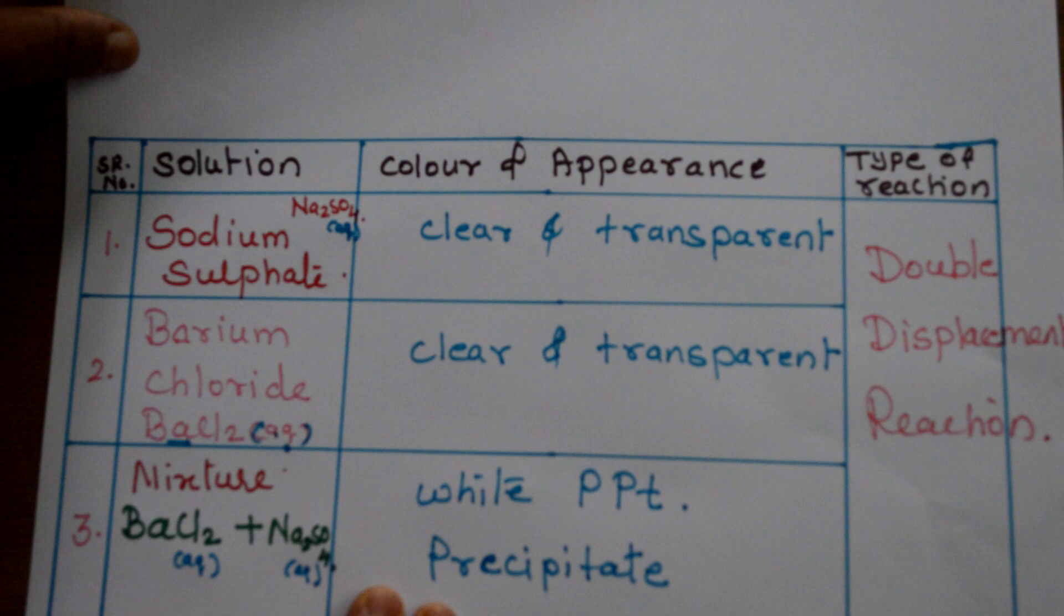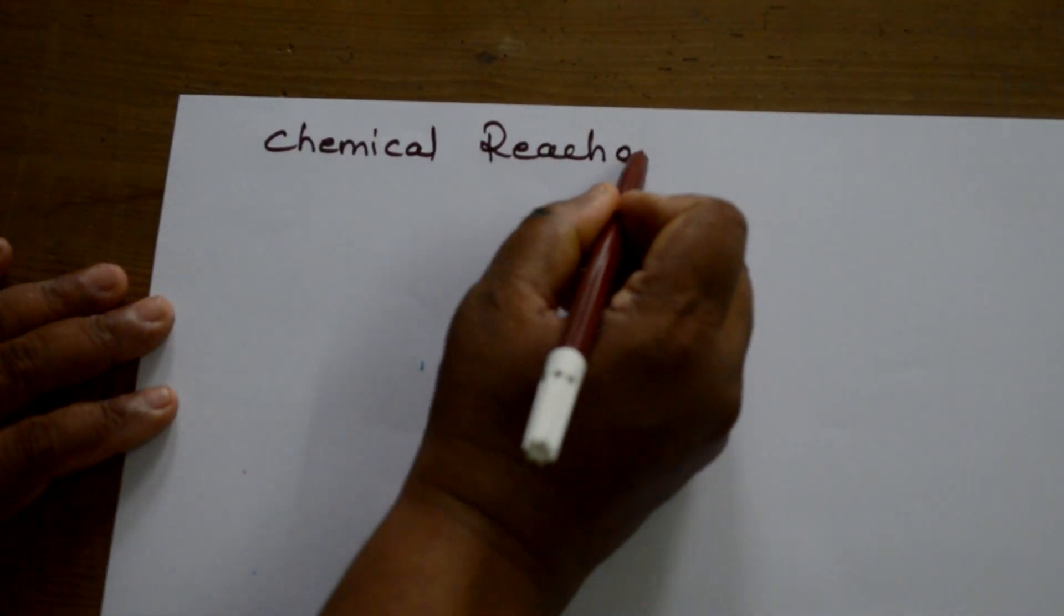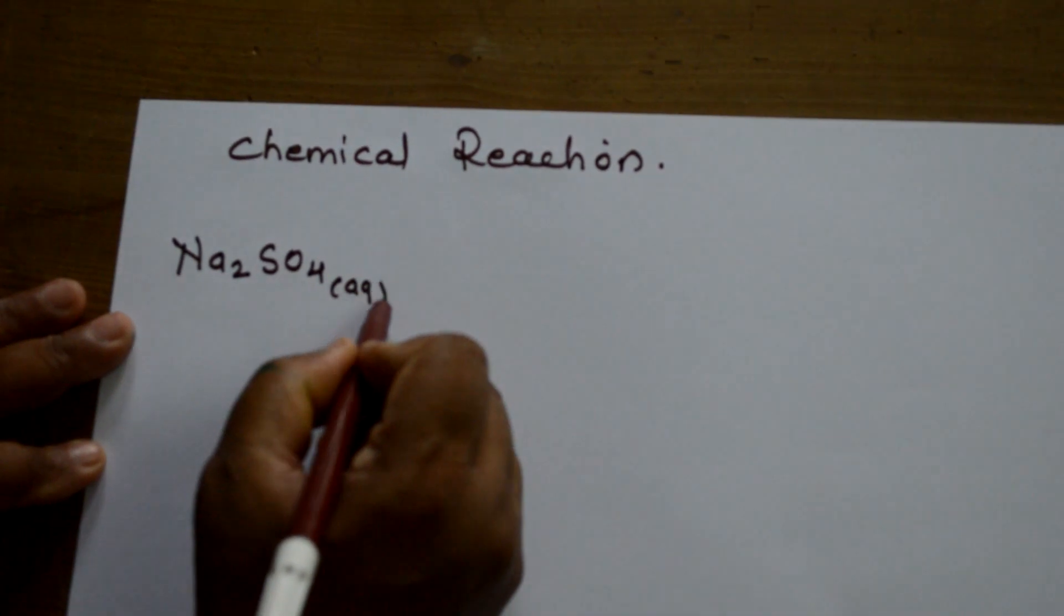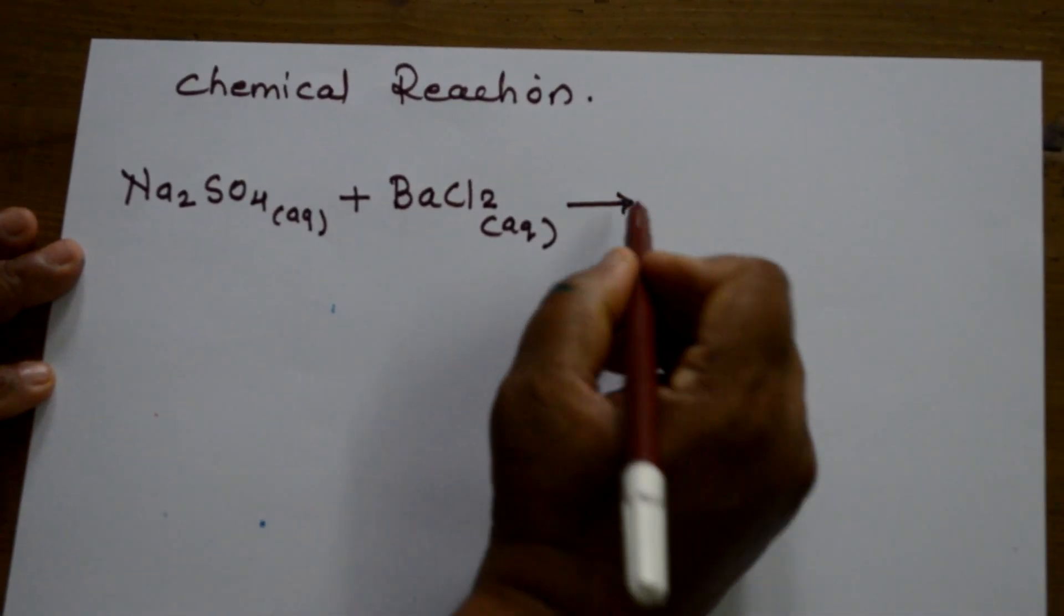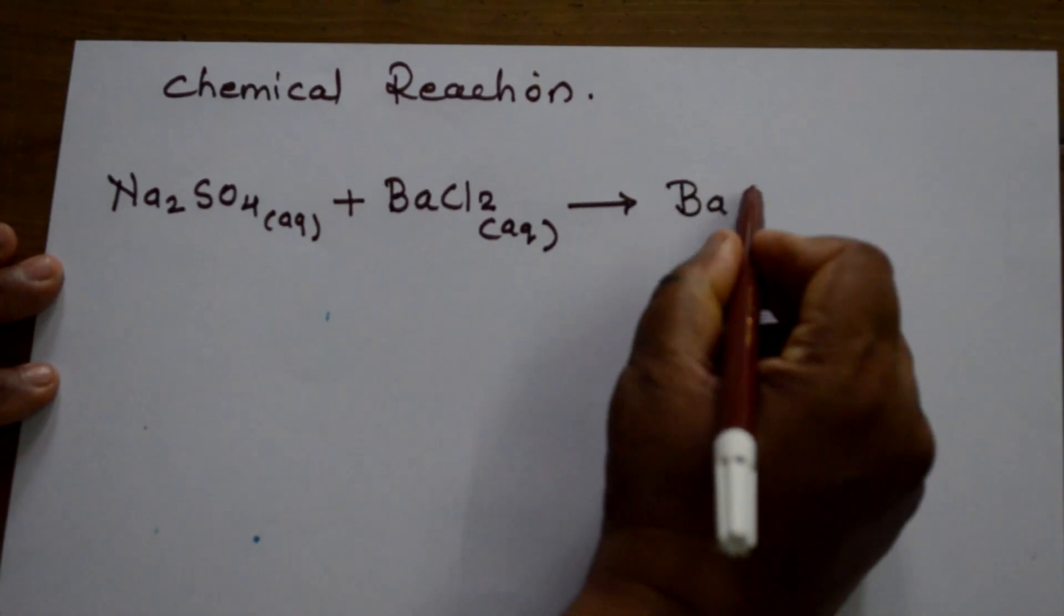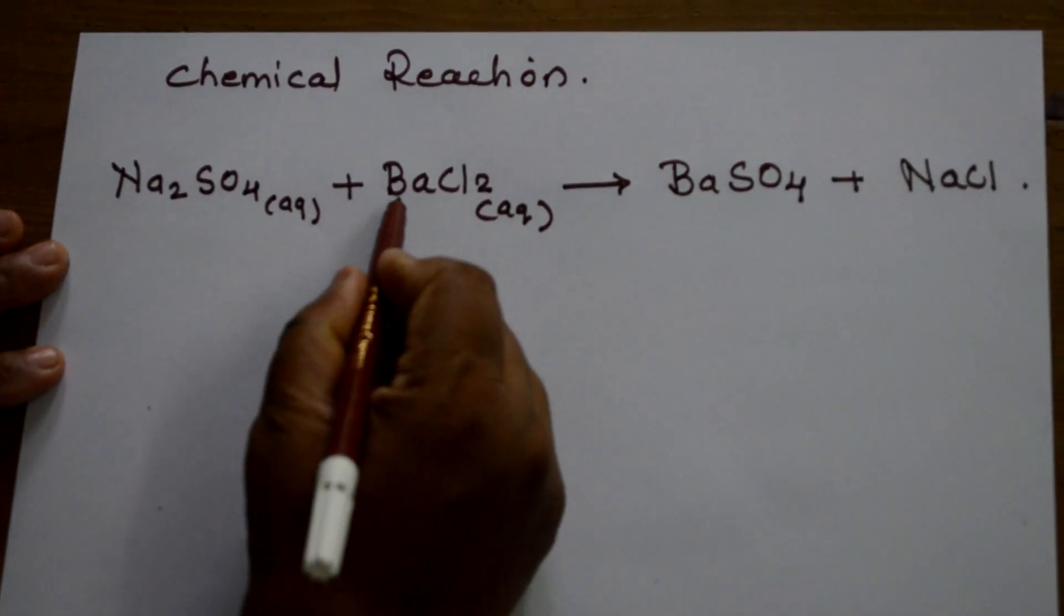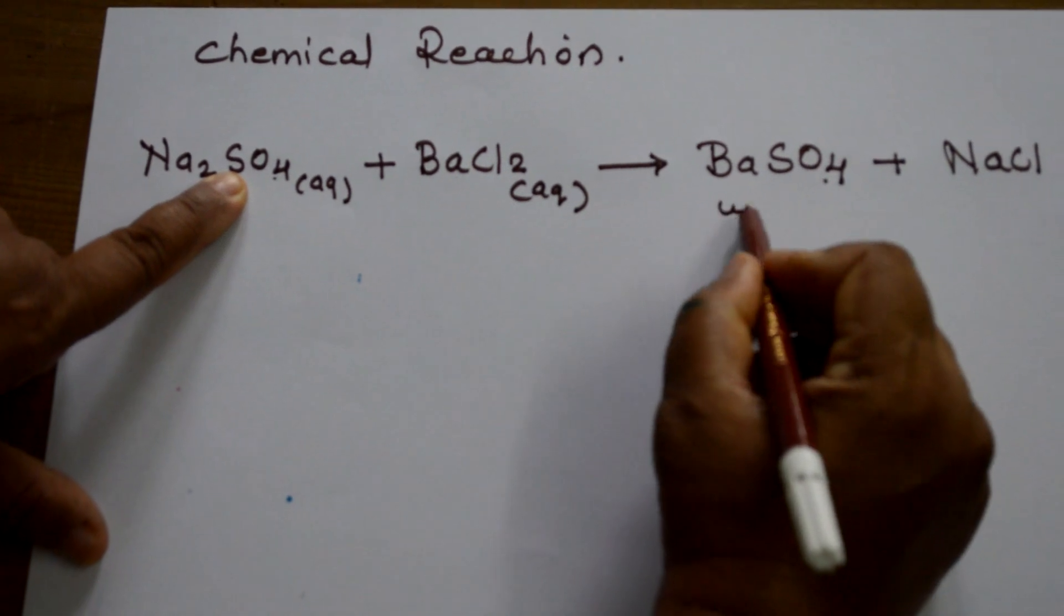Now I will be explaining the chemical reaction. Na2SO4 aqueous plus BaCl2 aqueous, and the result we got: BaSO4 plus NaCl. Barium combined with sulphate and formed barium sulphate, which is white PPT.